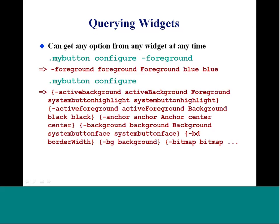To get any option from any widget at any time: if you say dot mybutton configure -foreground, it gives you the foreground value. If you just say dot mybutton configure with no option, it gives you all items in that widget — activebackground, activeforeground, anchor, background, borderwidth, and so on.